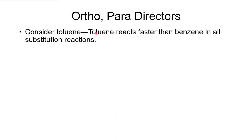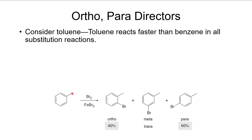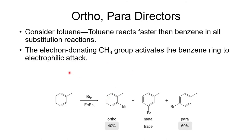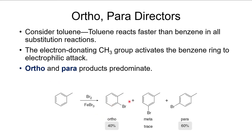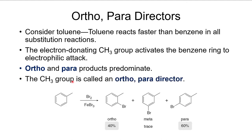Looking at ortho-para directors, we start with toluene. Toluene has a methyl (alkyl) group, which is electron-donating — it increases electron density in the ring and makes the reaction go faster, so it activates the ring. In addition, when we examine the products, we get primarily ortho and para substitution: about 40% ortho, 60% para, and hardly any meta product. Because of this we call the methyl group an ortho-para director, and all electron-donating groups are ortho-para directors.